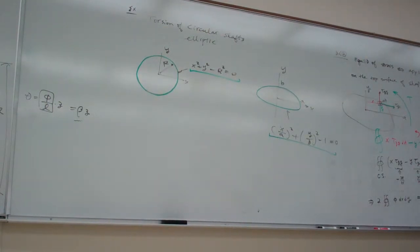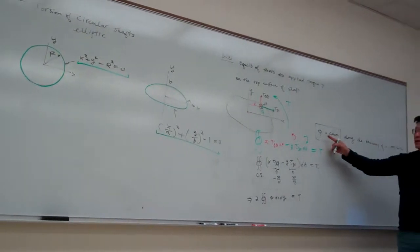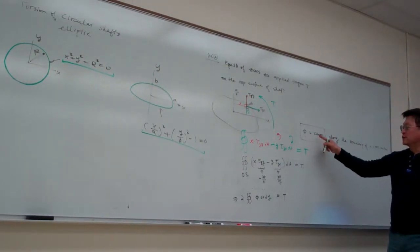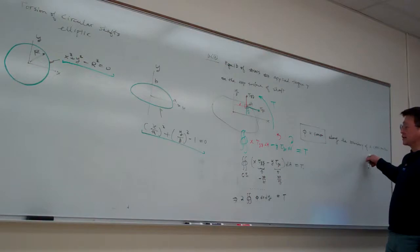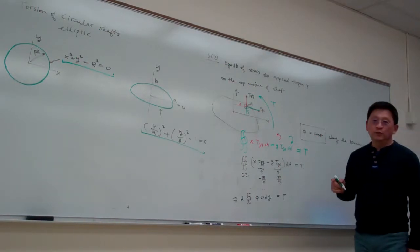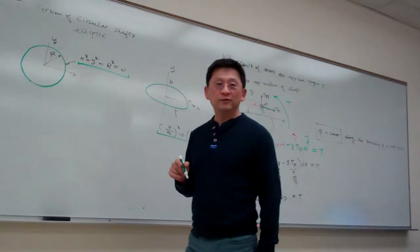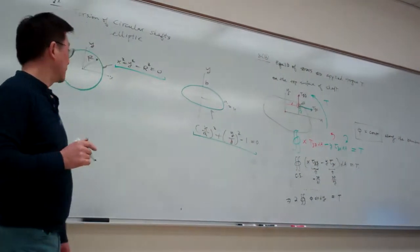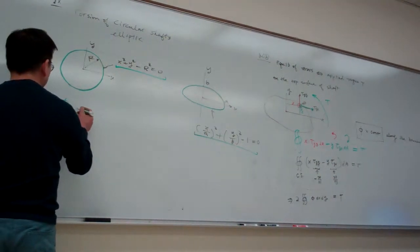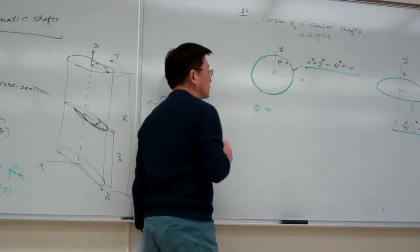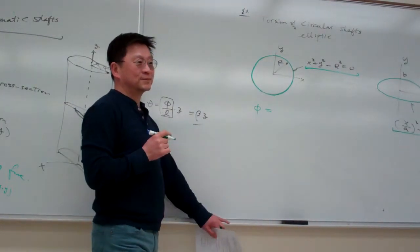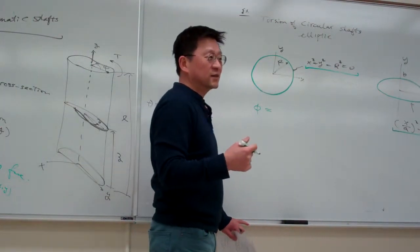we stick with this one, and Prandtl stress function is constant along the boundaries. So any hint you obtained from that one? So what would be this one? What would be this function? It's a constant. It's a constant, including 0.